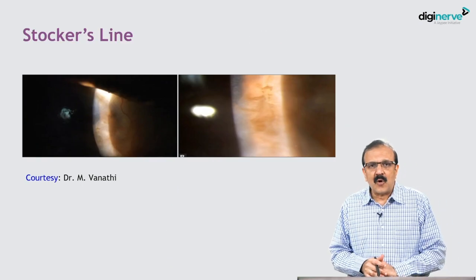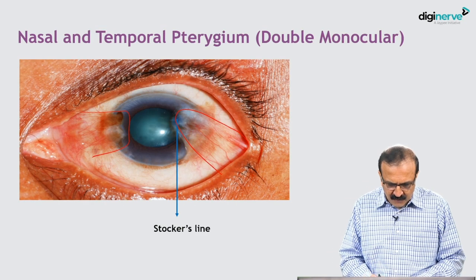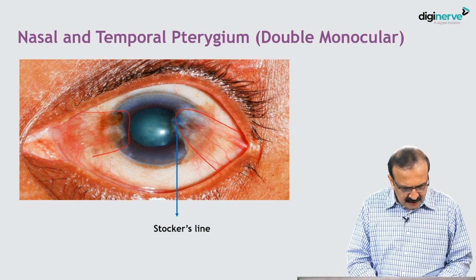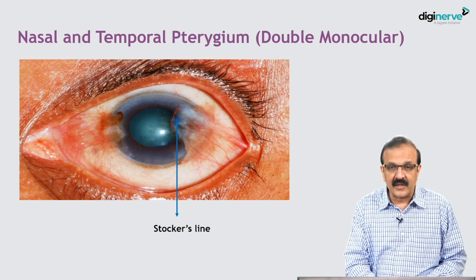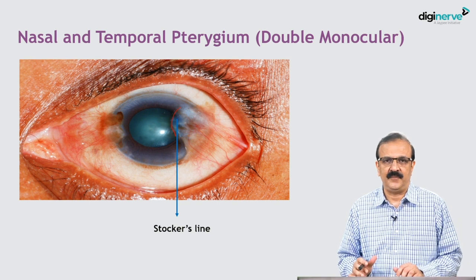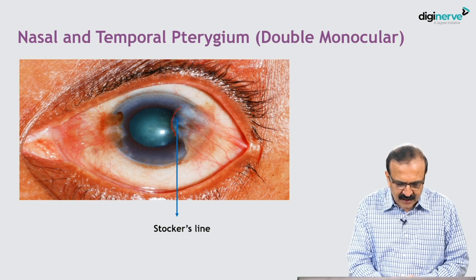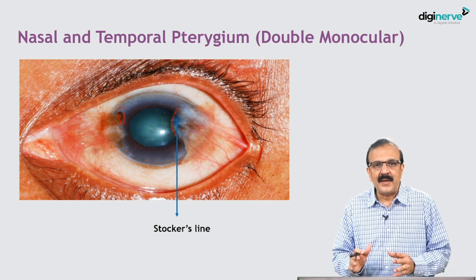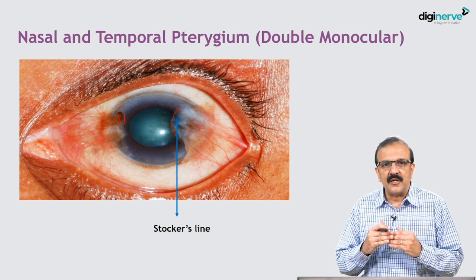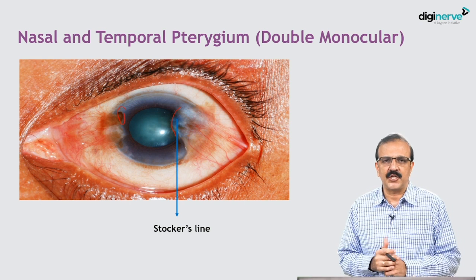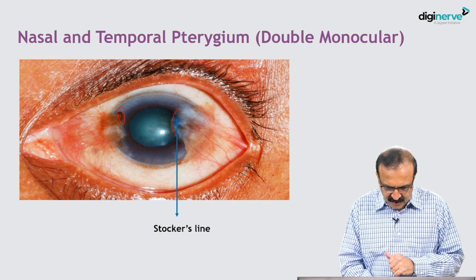We now come to what is called the Stocker's line. There is a pigmentation near the head of the pterygium, some just adjacent to the cap of the pterygium. This pigmentation is called Stocker's line, which is just adjacent to the advancing edge or the cap of the pterygium.